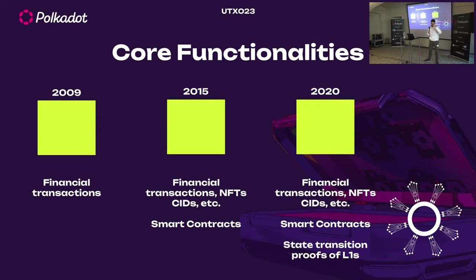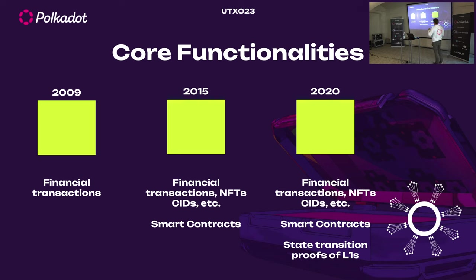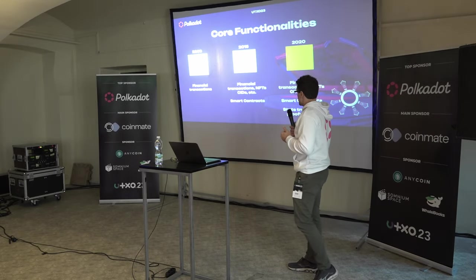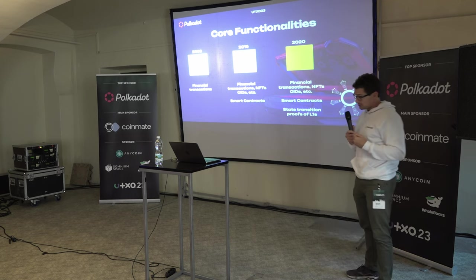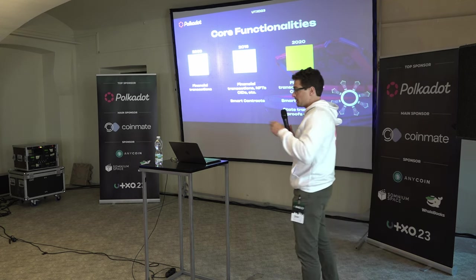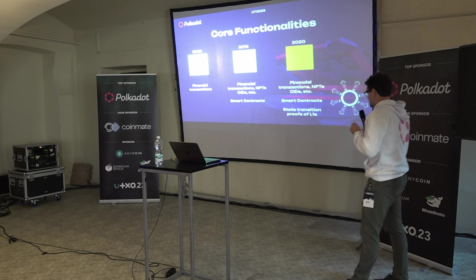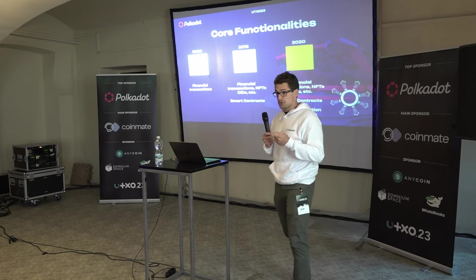Since the birth of blockchain with Bitcoin in 2009, in a block we stored financial transactions mostly at the beginning. Then Ethereum came in 2015 — now we can store financial transactions, NFTs, CIDs, smart contracts — a big, big thing at the time and still today. Then in 2020 came Polkadot. We cannot do smart contracts on Polkadot directly — we can do it on a parachain. What Polkadot really does is store state transition proofs of L1 chains.